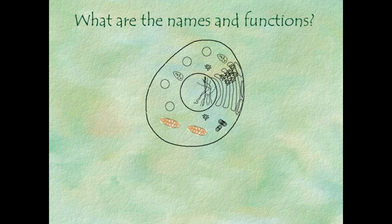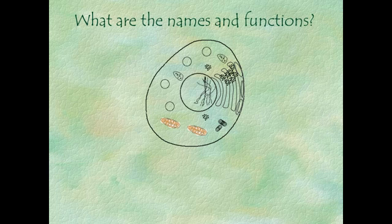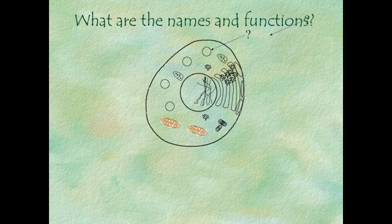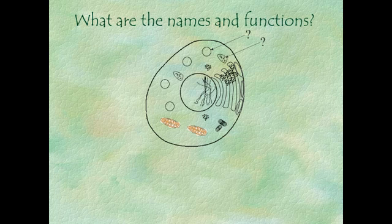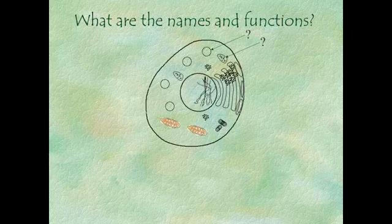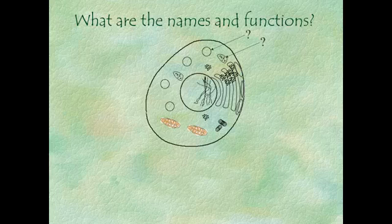Here we have a cell diagram, which looks very much like what you should already have. You should be able to recognize these different organelles and name their functions. We'll start with the vacuole, which functions as a storage tank. And this one is a lysosome. I won't have you distinguish between a vacuole and a lysosome on a diagram, because you really can't tell the difference — either in a diagram or a photograph of a cell. You would have to do much more sophisticated chemical analysis.